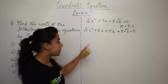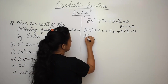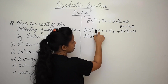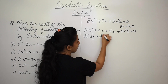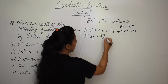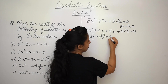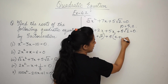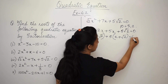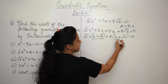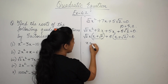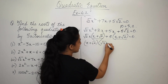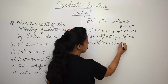Taking √2·x common from the first two terms gives √2·x(x + √2), because √2 × √2 = 2. Taking 5 common from the last two terms gives 5(x + √2). These two share the common factor (x + √2), so we get (x + √2)(√2·x + 5) = 0.